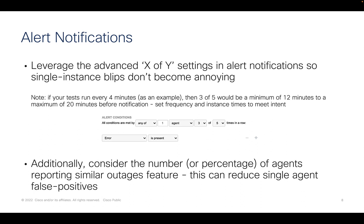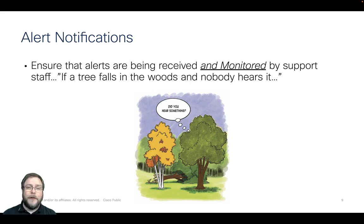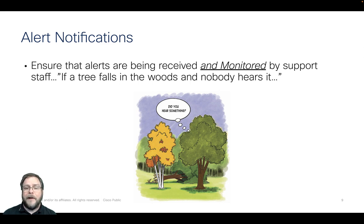Also consider choosing the number or percentage of agents reporting a similar outage — that can reduce false positives. If you have 20 cloud agents monitoring for you, you may want to say you need more than four of them showing an outage before you really take notice. And ensure that the alerts you're generating are being received and monitored by your support personnel. If a tree falls in the woods and nobody's there to hear it, did it really happen? Make sure people are picking up on the alerts as they're generated.